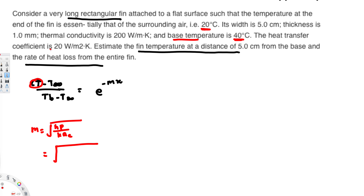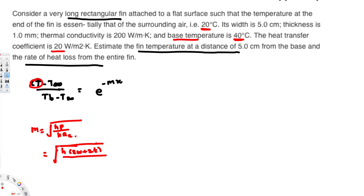We write it in general form first: m = √(h × [2W + 2t] / [k × W × t]), where W is width and t is thickness. For a rectangular fin, the perimeter is 2 times width plus 2 times thickness, and the cross-sectional area is simply width times thickness.